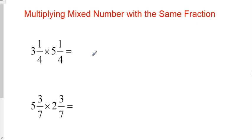This is multiplying mixed numbers with the same fraction. The way this is set up, there's two parts to this. These have to be the same fraction, and the whole numbers have to add to a multiple of the denominator.